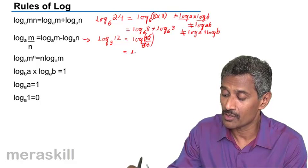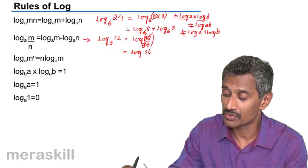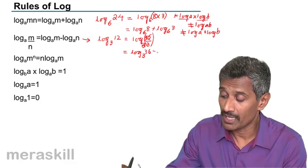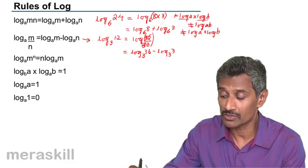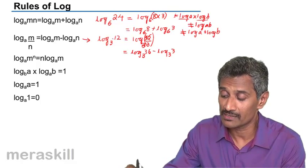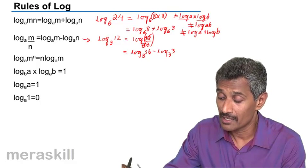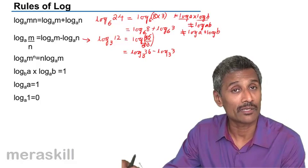We get this can be written as log 36 to the base 3 minus log 3 to the base 3. Because it is written as 12 as 36 upon 3, hence log of a by b is log of a minus log of b.